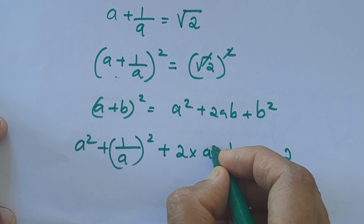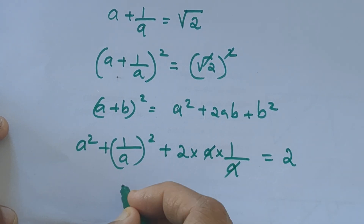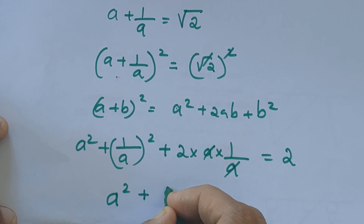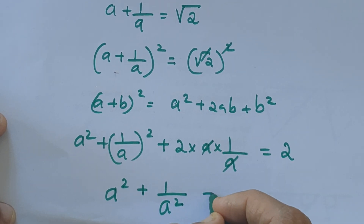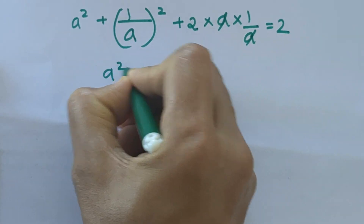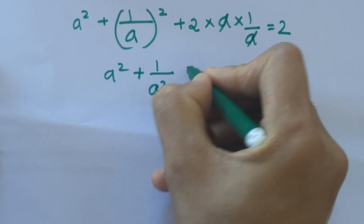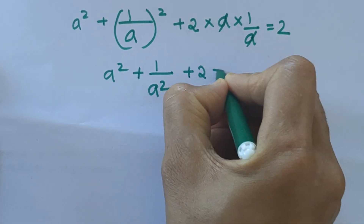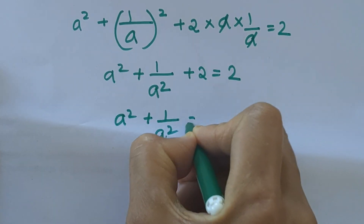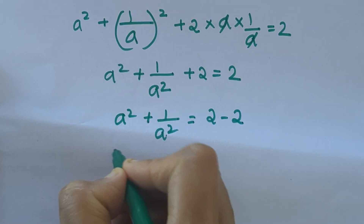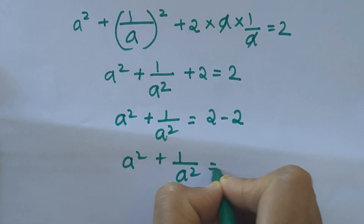Here the a in the numerator and denominator cancels. So we get a² + 1/a² + 2 = 2, which means a² + 1/a² equals 2 minus 2, so a² + 1/a² = 0.